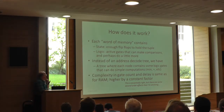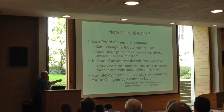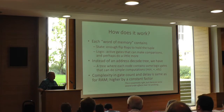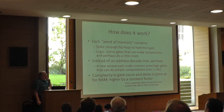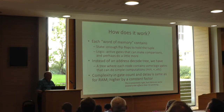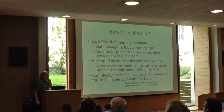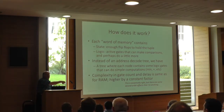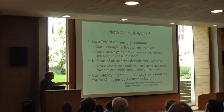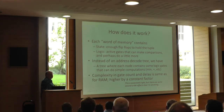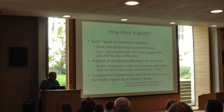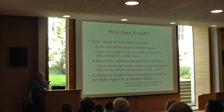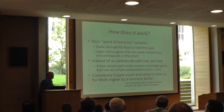How does an associative memory work? Every word of memory contains a bunch of flip-flops to hold the state, and also a lot of logic gates that can do comparisons and so forth — on the order of a hundred flip-flops and a hundred to a thousand logic gates. Instead of having a tree of logic gates to decode addresses, we enhance the tree a little so it can do some extra things. For example, you might do a fold of the minimum function. This kind of machine has a small constant factor of increased hardware compared to a RAM, but its complexity is the same.